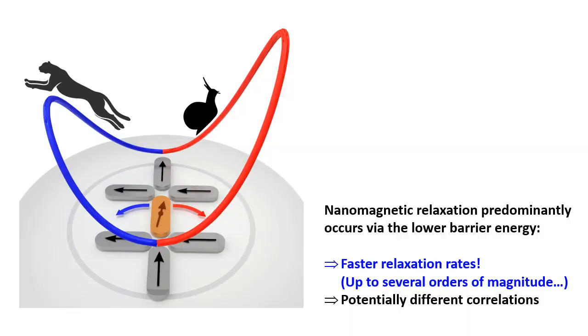The chiral splitting of barrier energies has dramatic consequences for the relaxation kinetics of artificial spin ices. Transition over a lower barrier leads to rates that can be several orders of magnitude faster compared to the often-used mean field model.